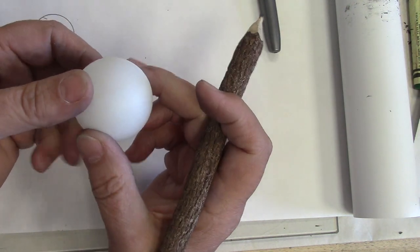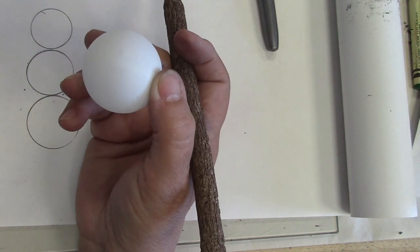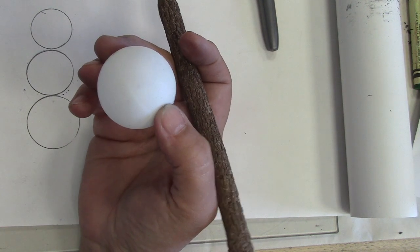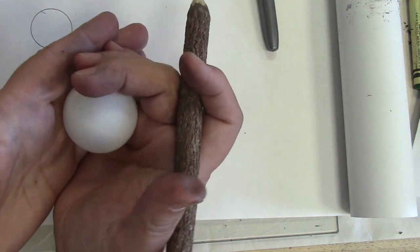But do they look round? Here I have a circle, a ping pong ball. Is it round? How do you know? You can tell by how my hand is folding around it. That's one way.